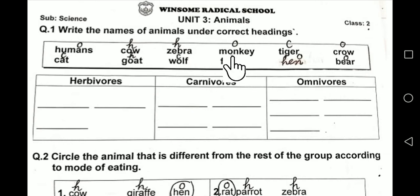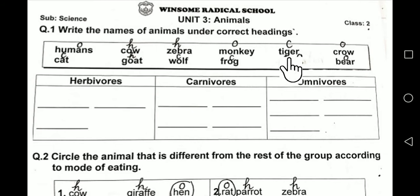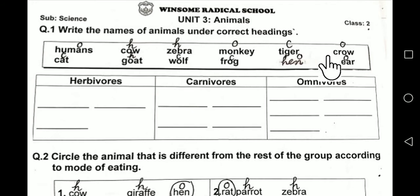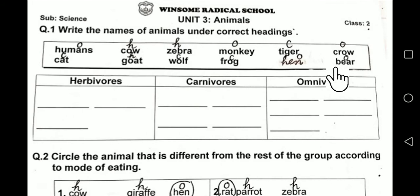Monkey is omnivore because monkey eats both meat and plants. Tiger is a carnivore — tiger is a wild animal and eats other animals and meat only. That's why we will write C on it. Crow is omnivore.